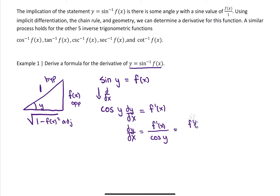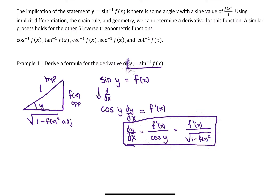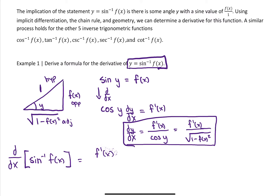We want to isolate dy over dx, so dy over dx equals f prime of x divided by cosine of angle y. Remember, cosine is adjacent over hypotenuse, so cosine of y is the square root of 1 minus f of x squared. Therefore, the derivative of sine inverse of a function is equal to the derivative of the function divided by the square root of 1 minus the function itself squared.